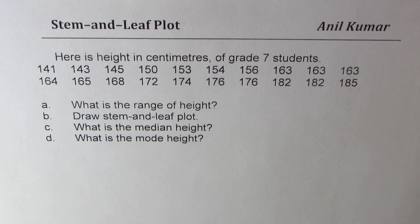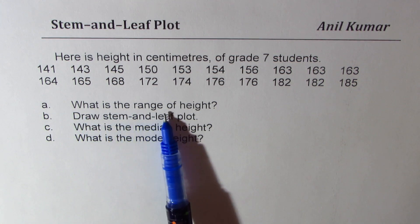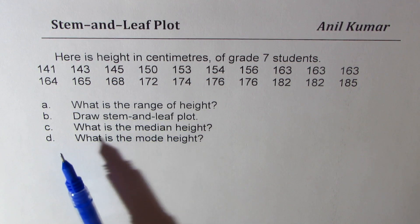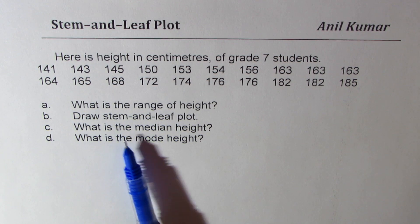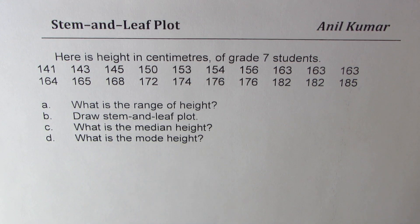Based on this information we have four questions. The first one is what is the range of height? B, draw stem and leaf plot. C, what is the median height? D is what is the mode height? These are four standard questions which you are supposed to answer from the given information. Let us understand how to answer these questions.